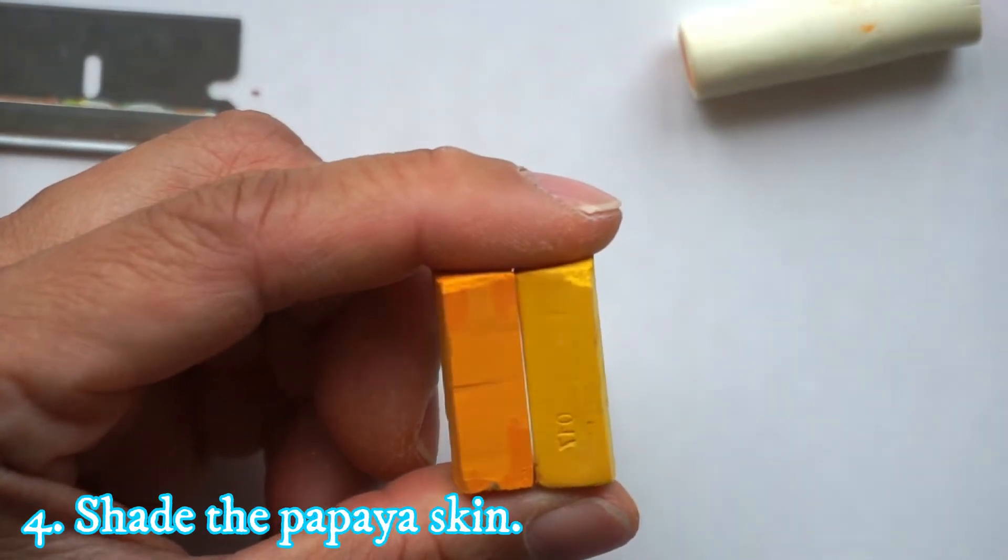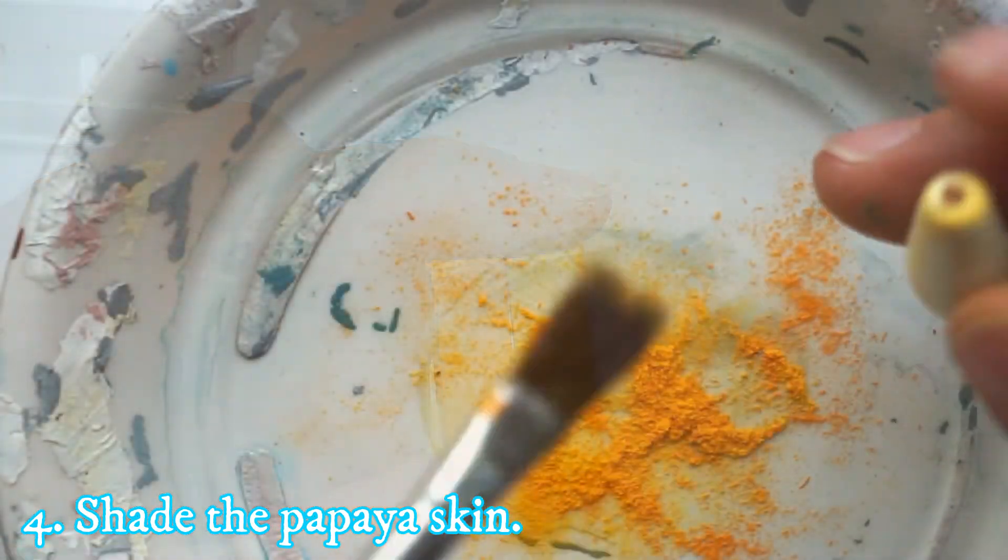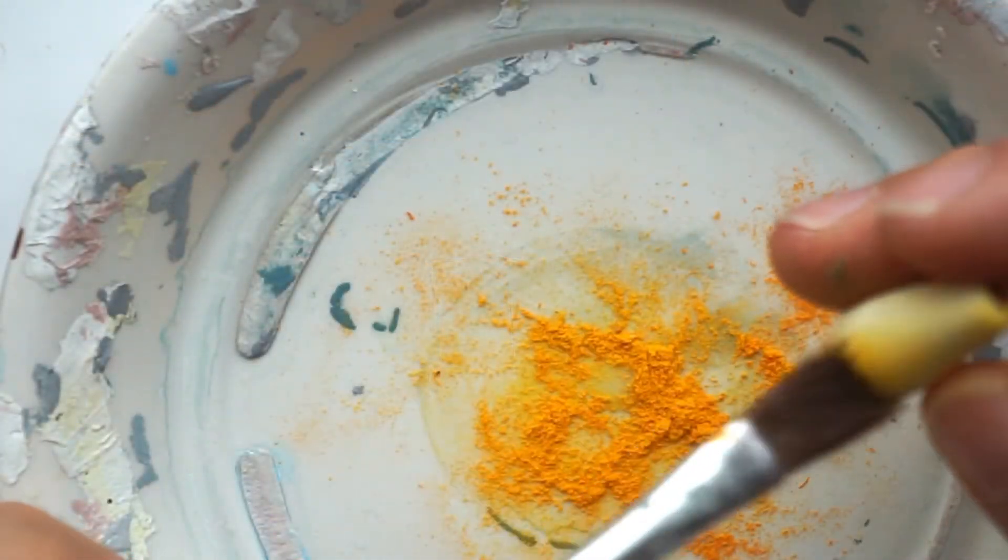Next, shade the whole papaya with the mixture of sunflower yellow and lemon yellow chalk pastel.